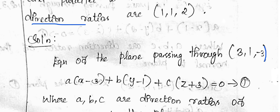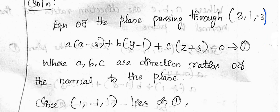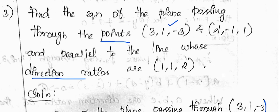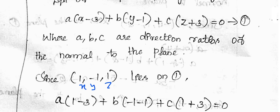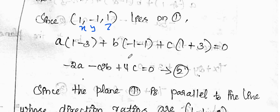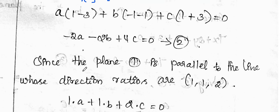Where a, b, c are the direction ratios of the normal to the plane. Since the point (1, 1, 1) lies on equation 1, we substitute x1=1, y1=1, z1=1. This gives: a(1-3) + b(1-1) + c(1+3) = 0, which simplifies to -2a + 0b + 4c = 0. This is equation 2.